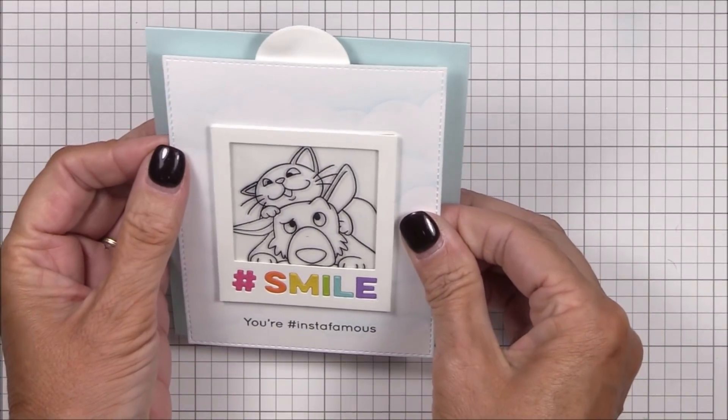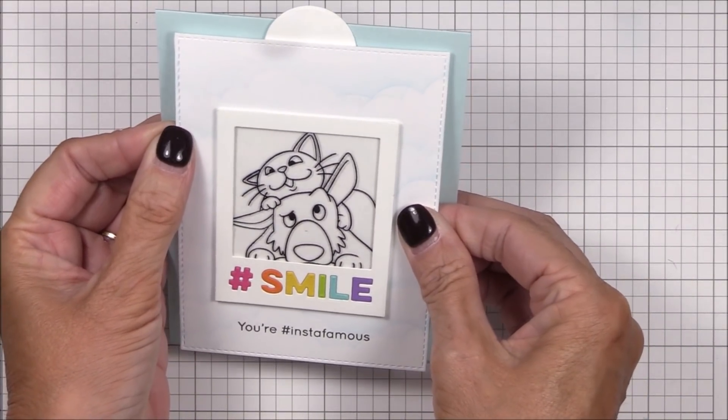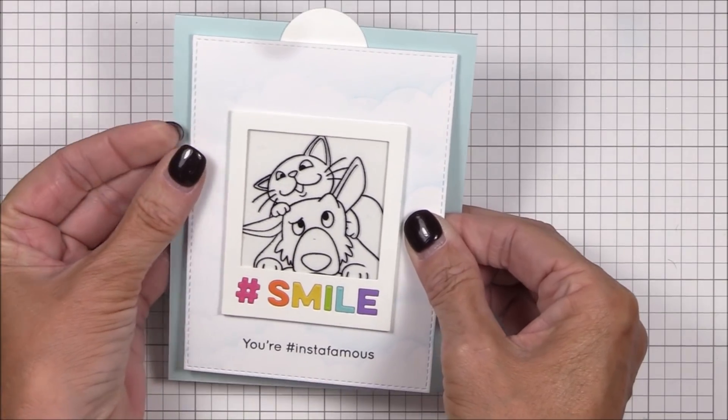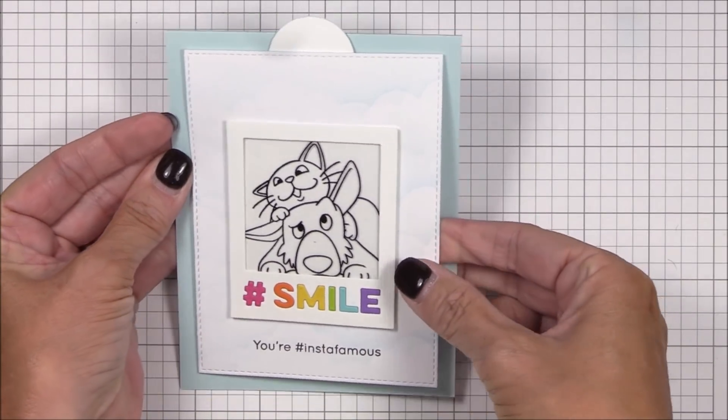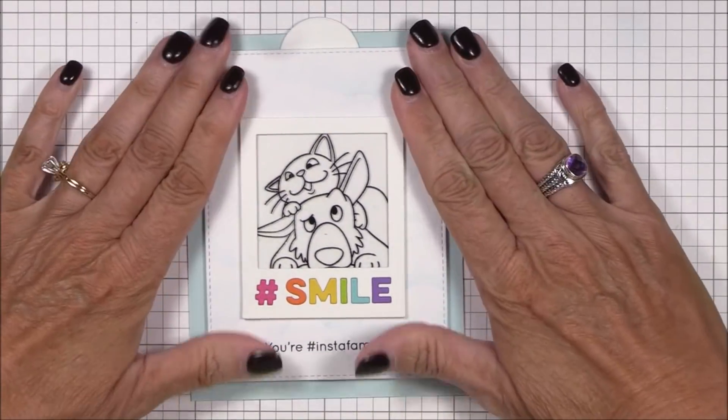I've adhered some foam squares to the back of the image panel, and I'm adhering it to a four and a quarter inch by eleven inch snow cone card base that I've scored at five and a half inches and folded in half.